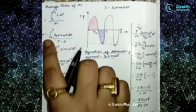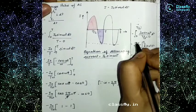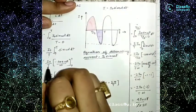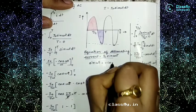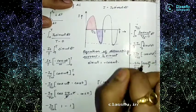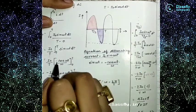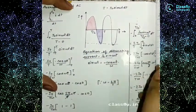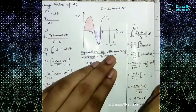For the full cycle we take from 0 to T, and for the half cycle we take 0 to T/2. So we get (I₀/T) ∫(0 to T) sin(ωt) dt for the full cycle, and (2I₀/T) ∫(0 to T/2) sin(ωt) dt for the half cycle. We know that the integral of sin(ωt) gives −cos(ωt)/ω. So we obtain −cos(ωt)/ω evaluated from 0 to T for the full cycle, and (2I₀)/(Tω) [−cos(ωt)] from 0 to T/2 for the half cycle.